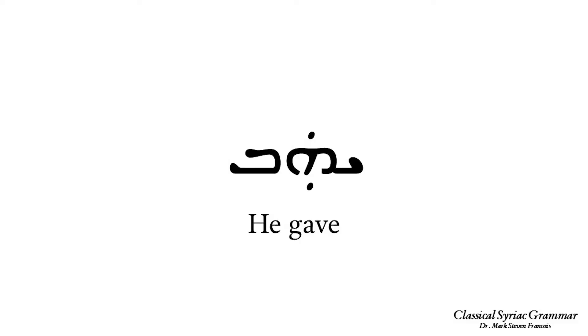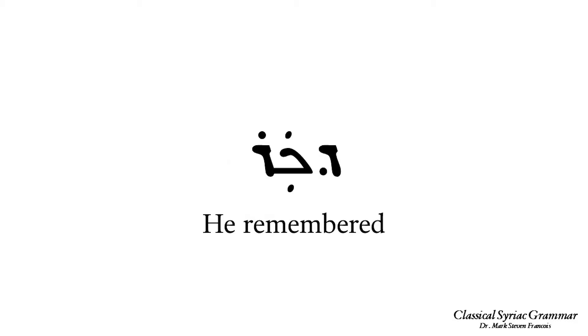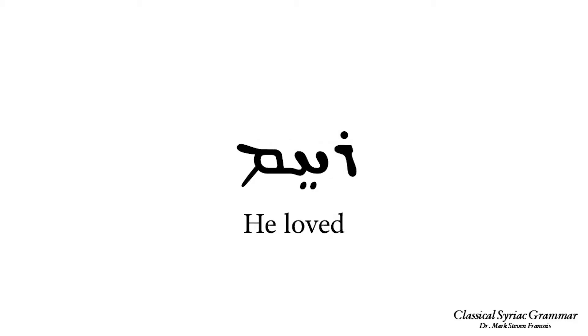The first example is a verb meaning 'he gave' — a simple action in the active voice. The second example means 'he remembered' — a simple action in the active voice. The third example means 'he loved' — again, a simple action in the active voice. So the Pe'al is the most basic verbal pattern in Classical Syriac, indicating a simple action or state of being in the active voice.